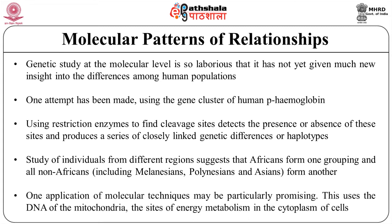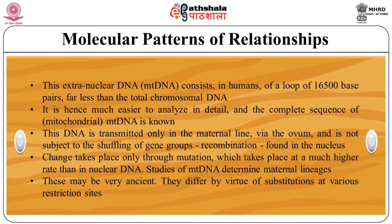One application of molecular technique may be particularly promising: this uses the DNA of the mitochondria, the sites of energy metabolism in the cytoplasm of the cells. This extra-nuclear DNA, or mitochondrial DNA, consists in humans of a loop of 16,500 base pairs, far less than the total chromosomal DNA. It is hence much easier to analyze in detail and the complete sequence of mitochondrial DNA is known. This DNA is transmitted only in the maternal line via the ovum and is not subject to the shuffling of gene groups — that is, recombination — found in the nucleus. Change takes place only through mutation, which takes place at a much higher rate than in nuclear DNA. Studies of mitochondrial DNA determine maternal lineages.